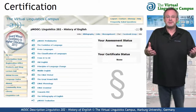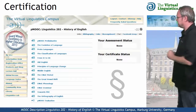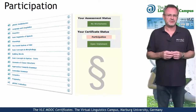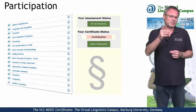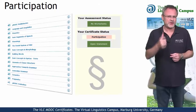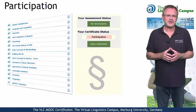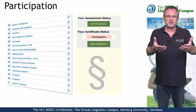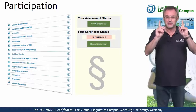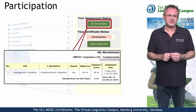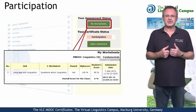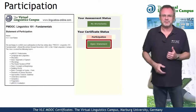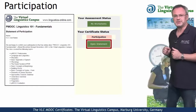And if you want a certificate, here are your options. The simplest option is the statement of participation issued by the Virtual Linguistics Campus. You will receive such a certificate for regular and active participation, including the submission of at least one worksheet, and for free. Once you have successfully submitted a worksheet, you will be eligible for such a certificate and can open it by hitting the Open Statement button.